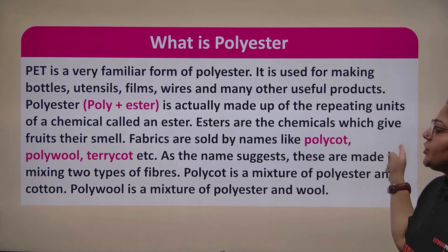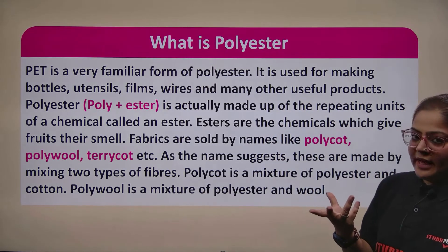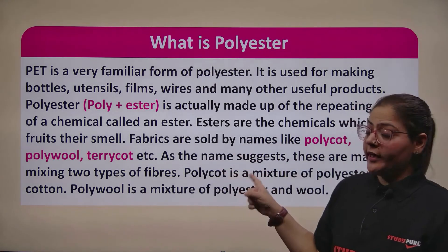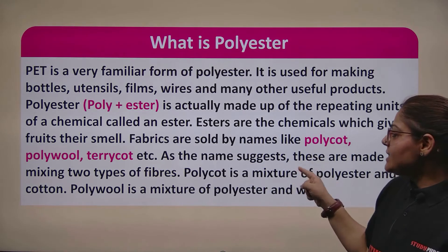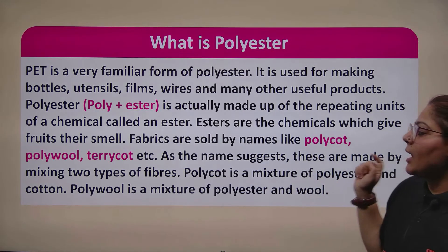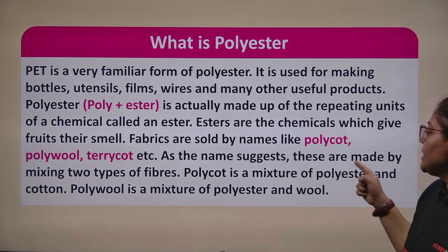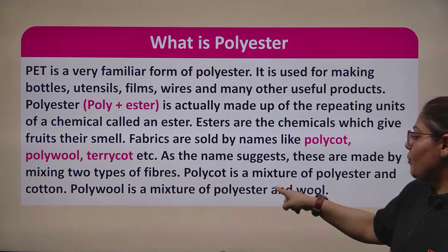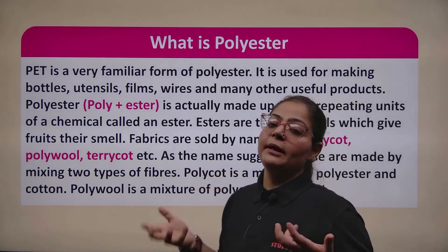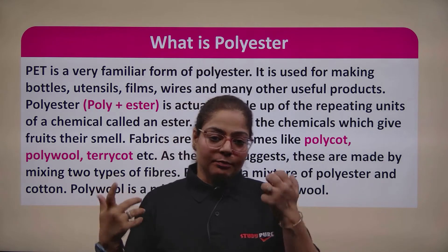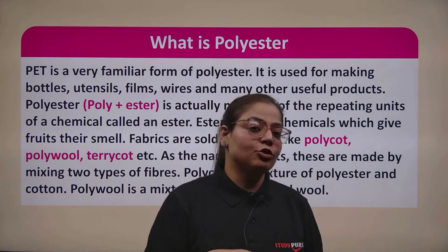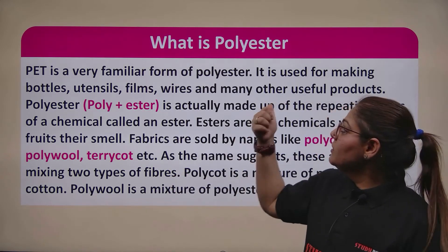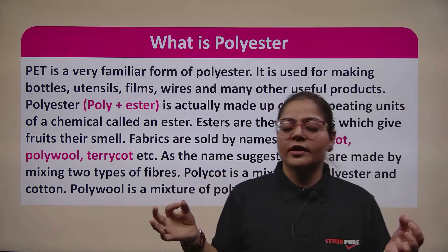Fabrics are sold by names like polycott, polywool, terricot, etc. — and you will hear these names. As the name suggests, these are made by mixing two types of fibers. Polycott is a mixture of polyester and cotton; polywool is a mixture of polyester and wool. You can see how experimentation works in science — when you experiment between two chemicals or two types of compounds, you can make new inventions. This tells you polyester is very useful because there are so many places where we use polyester without even knowing it.